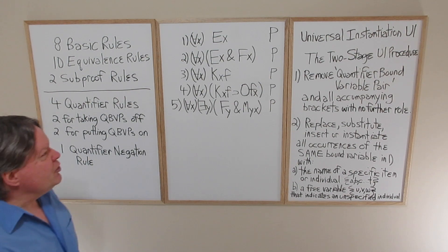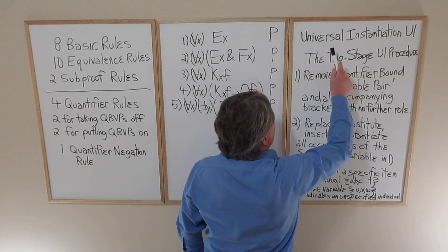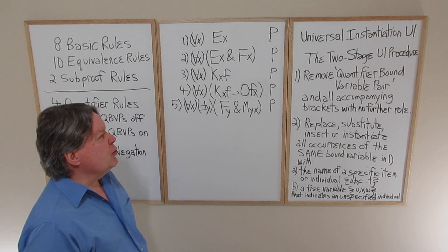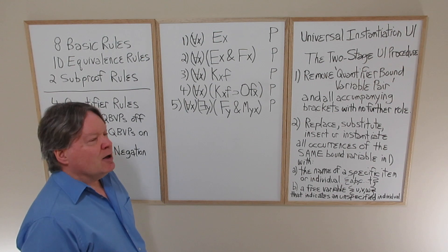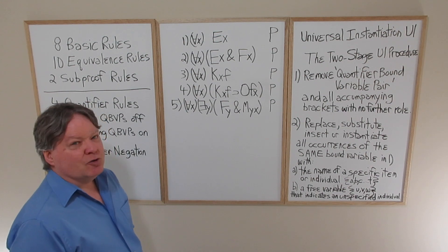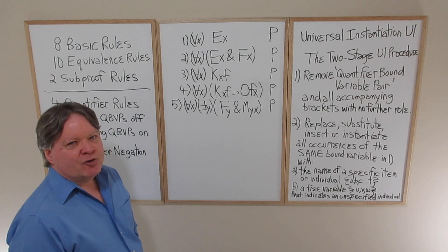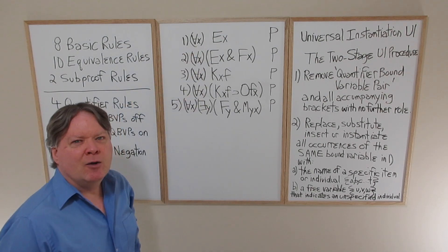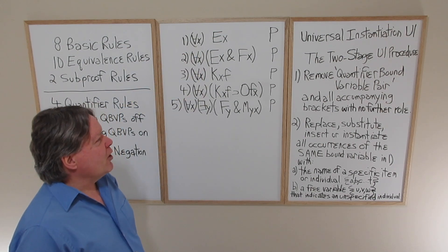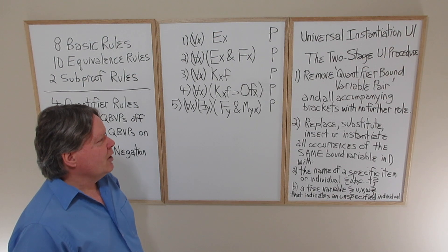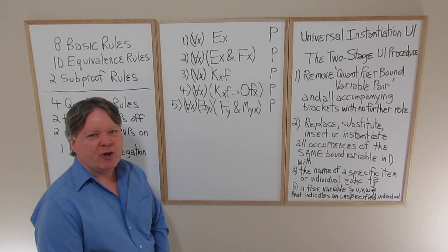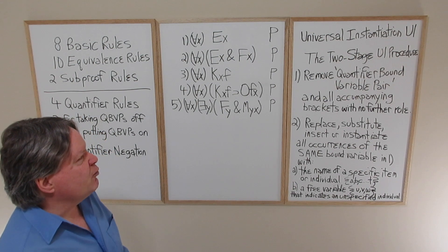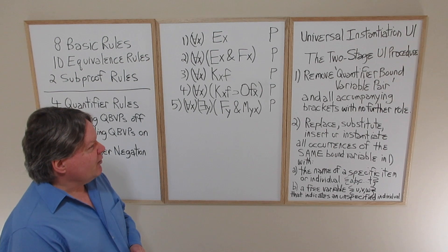The first new rule is called Universal Instantiation, abbreviated UI. Universal Instantiation is the rule that enables us to remove universal quantifiers and the bound variables that go with them from sentences. There's a two-stage UI procedure that I hope you'll find easier and straightforward to understand how to apply.